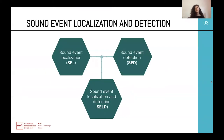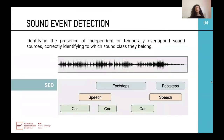Sound Event Localization and Detection can be seen as a union of two separate and independent tasks: Sound Event Localization and Sound Event Detection. For Sound Event Detection, we refer to the identification of the presence of independent or temporally overlapping sound sources, correctly identified to which sound class they belong. So if we have a waveform, the Sound Event Detection task should be able to detect the onset and offset of the sounds and the class that they belong to.